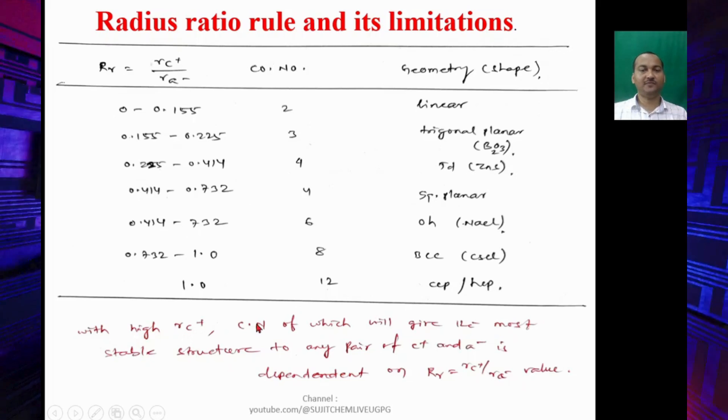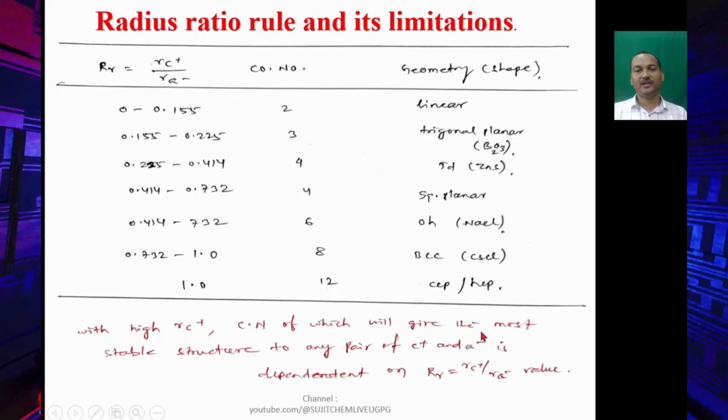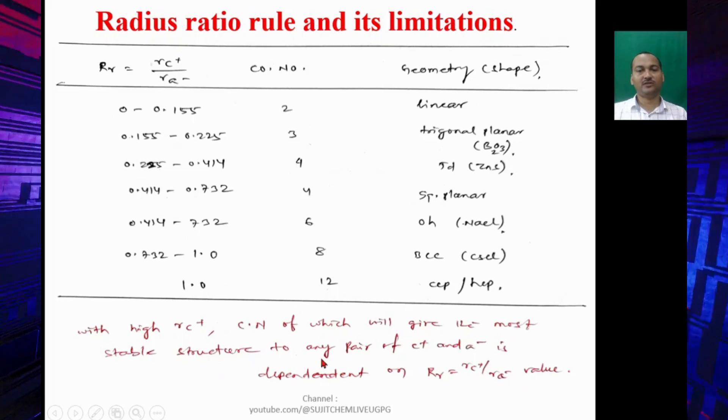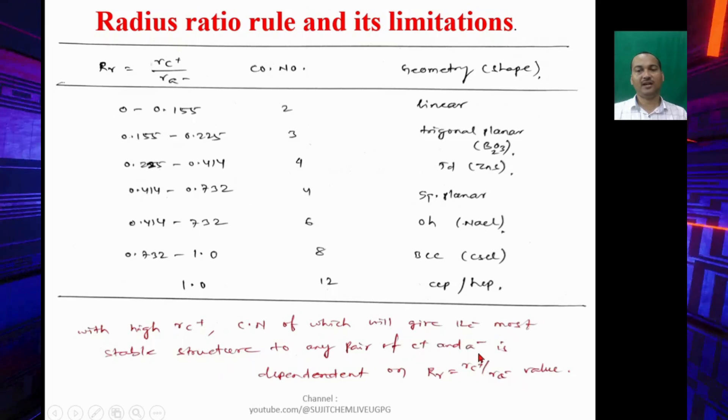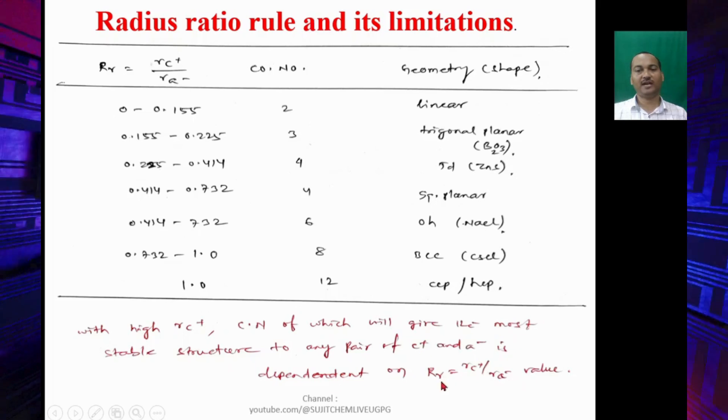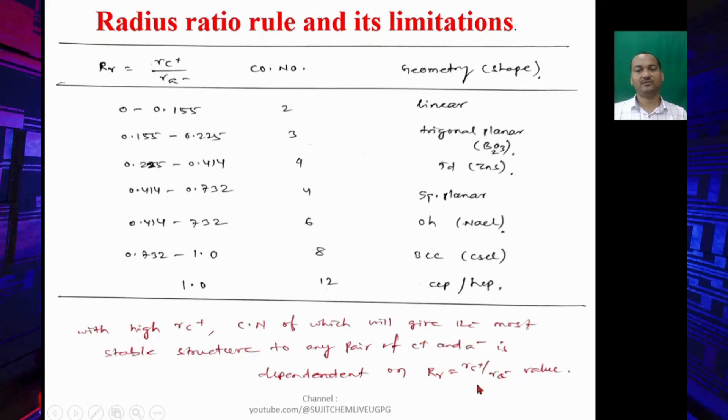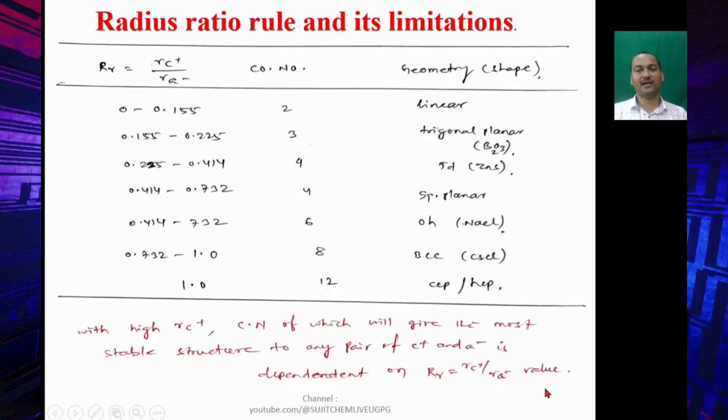With a high RC+, the coordination which will give the most stable structure to any pair of cation and anion is dependent upon the radius ratio RC+ to RA- value, so radius of cation to radius of anion value.